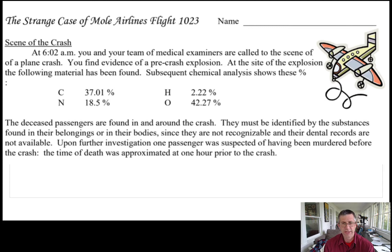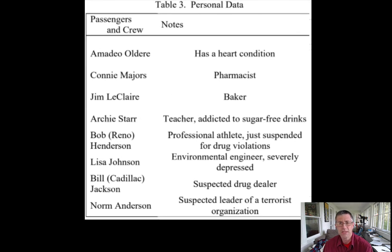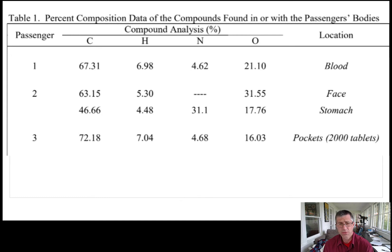So here's a fictional airplane crash scenario. There were eight passengers on this airline and they've collected a variety of information about these passengers. It turns out there was a murder before the plane crash — you get to figure out who murdered who by doing chemistry. Among the people on board were a baker, a suspected drug dealer, and the leader of a terrorist organization. The data they collected looks like this — I'm going to go through the first two so you'll be able to do this. This is homework if you're in my class.